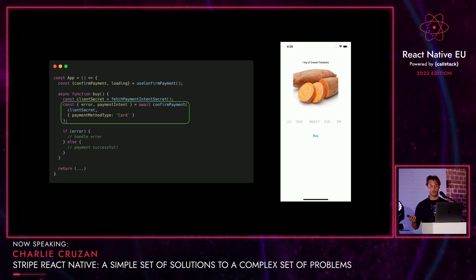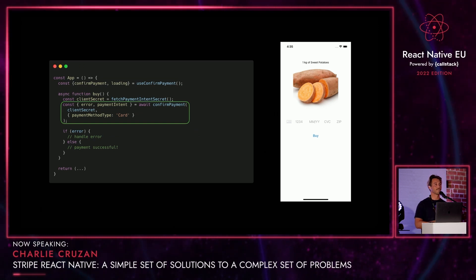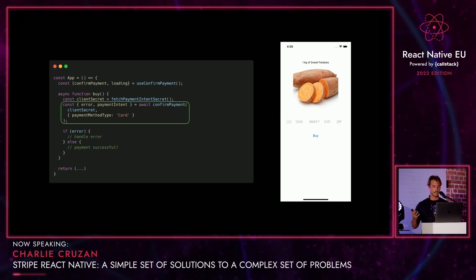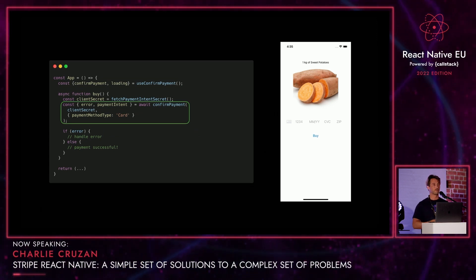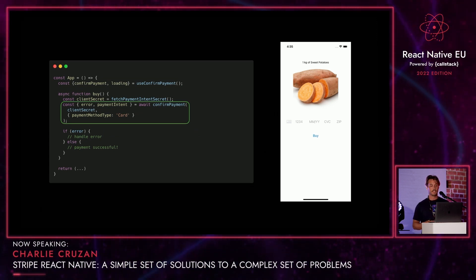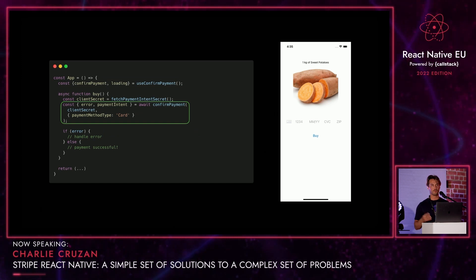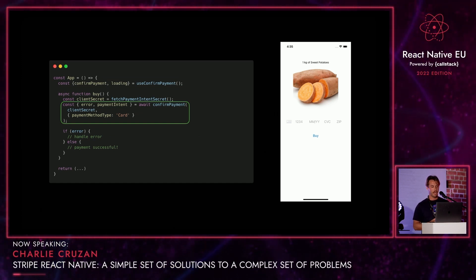The Stripe SDK is smart enough in the background to pull that data from the card field — you don't have to link it or anything like that. This means that you aren't directly handling any payment data. So PCI compliance is a breeze. You essentially just check a box on a form and you're done.